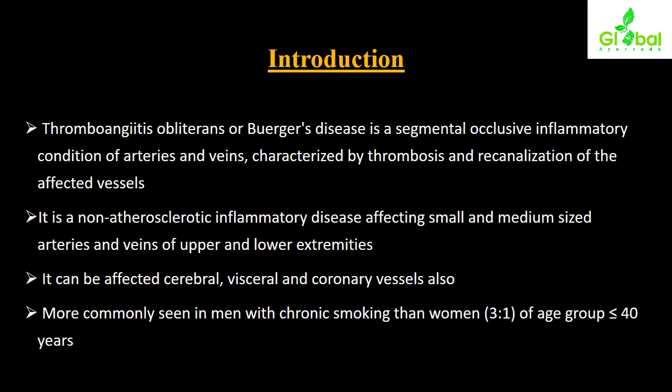Thromboangiitis obliterans, or Buerger's disease, affects arteries and veins in a segmental manner — specific portions of arteries and veins are involved — with formation of thrombosis and re-canalization of the affected vessels. It is a non-atherosclerotic inflammatory disease affecting small and medium-sized arteries and veins of the upper and lower extremities.